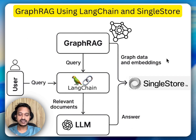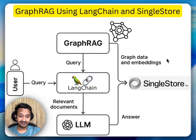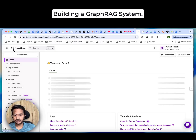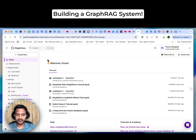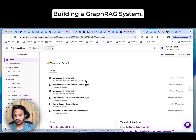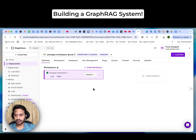So that's it — we're going to see how to build a perfect GraphRAG using SingleStore and LangChain in the next part of this video. Here's the complete notebook code for GraphRAG using SingleStore and LangChain. The first thing you need to do is create a SingleStore account — go to singlestore.com.